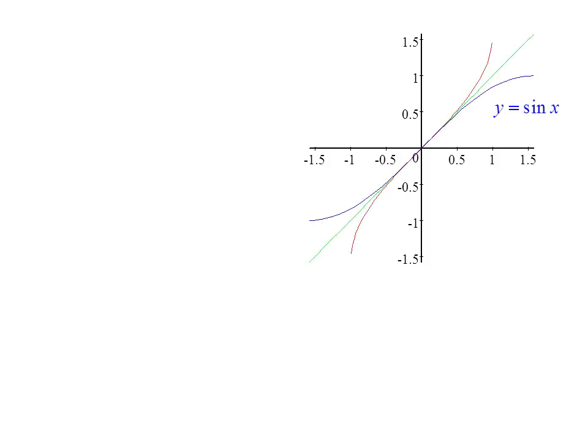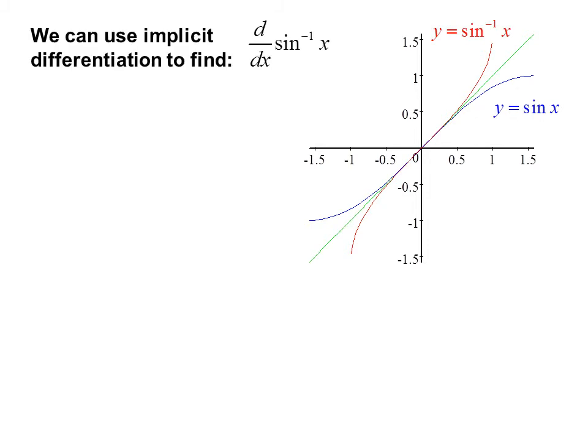If we look at the graph of y equals sin x and y equals inverse sin x, we see, as expected, that they are symmetrical about the line y equals x. Now we can use implicit differentiation to find a formula for the derivative of inverse sin x.